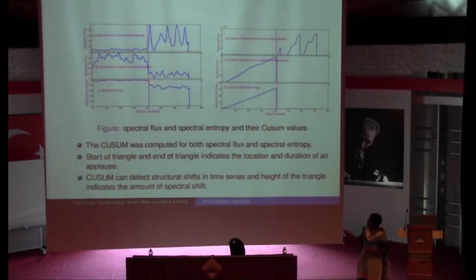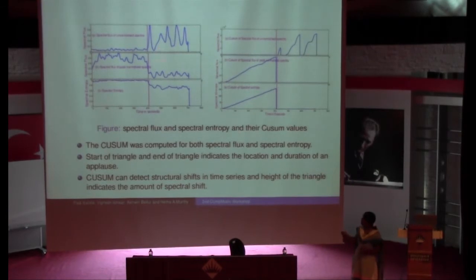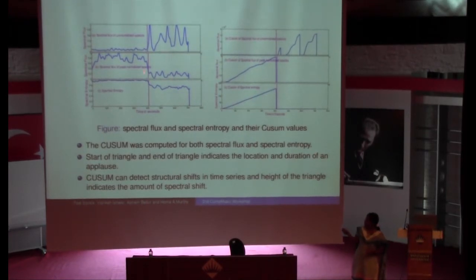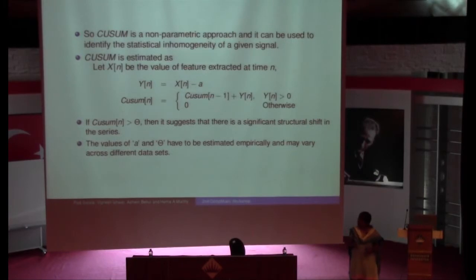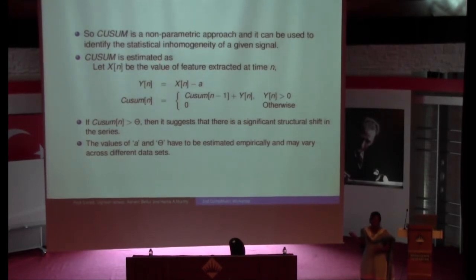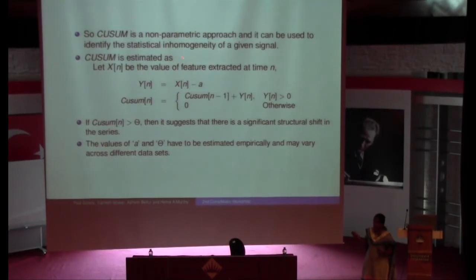Similarly, subtracting the mean from the other features causes music regions to go negative, and whenever negative I make it zero. For all three techniques I applied threshold-based identification, but spectral flux without normalization behaves inversely — subtracting the mean gives zeros for applause and triangles for non-applause. Because of that, I use spectral flux with peak normalization and spectral entropy for identifying the highlights of the concert. In the CUSUM algorithm, x(n) is the feature (either spectral flux or spectral entropy), and the parameter a is set to the mean of the entire feature. I subtract a from every sample; if greater than zero I sum it up, if less than zero I set it to zero.